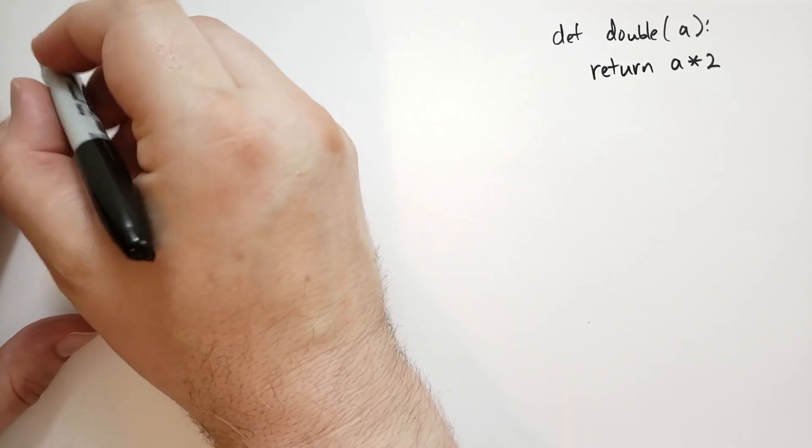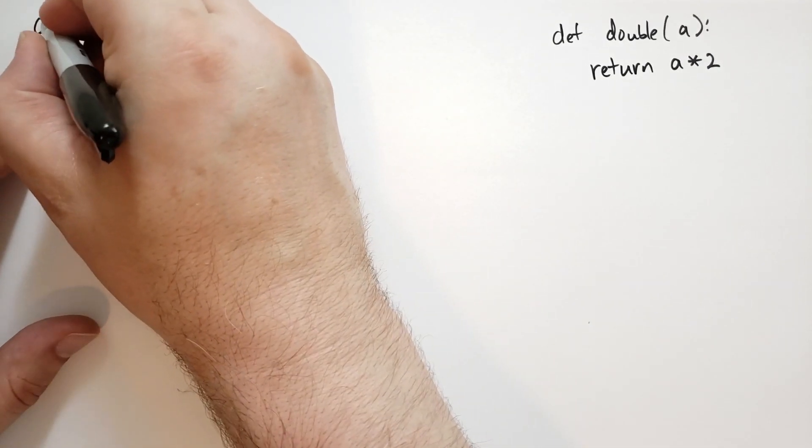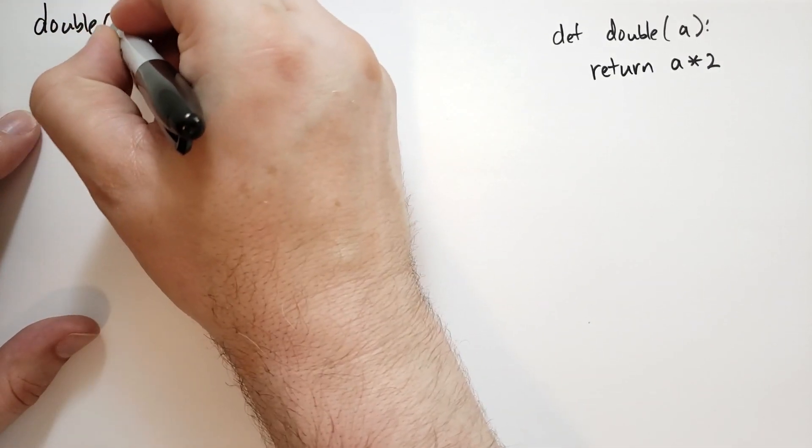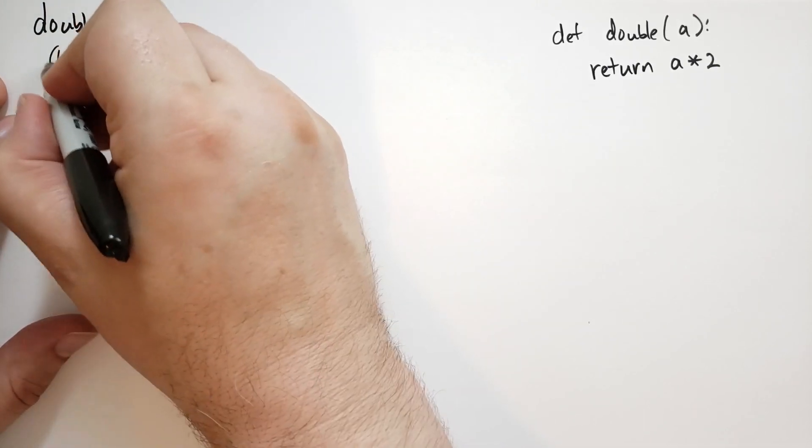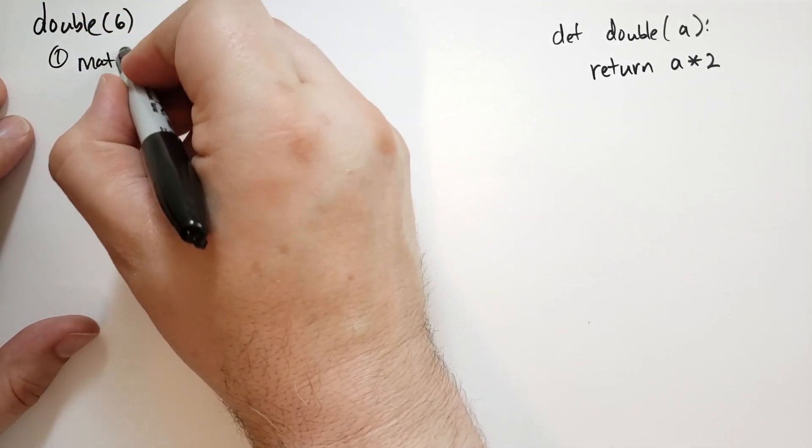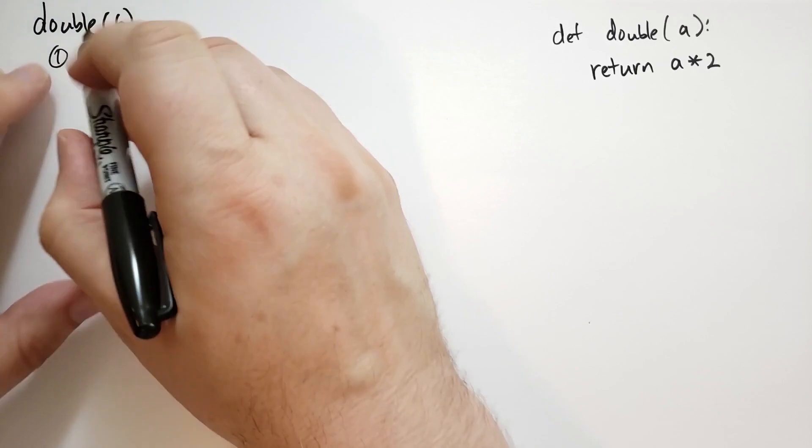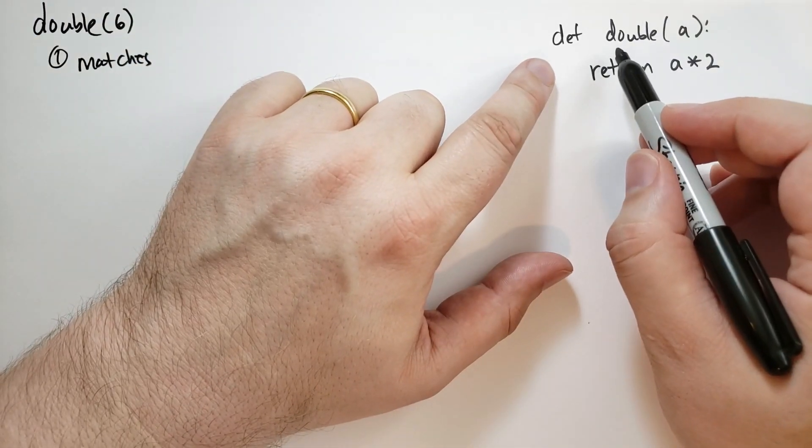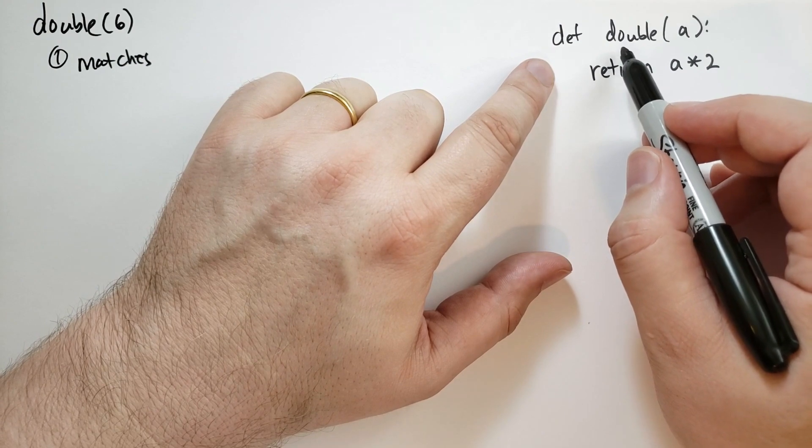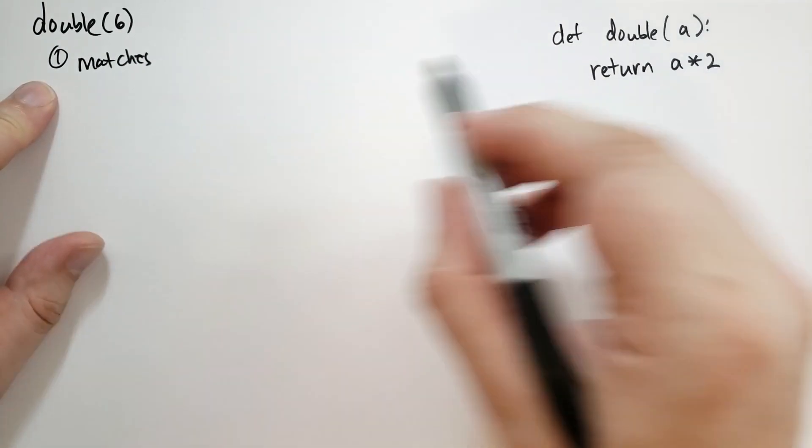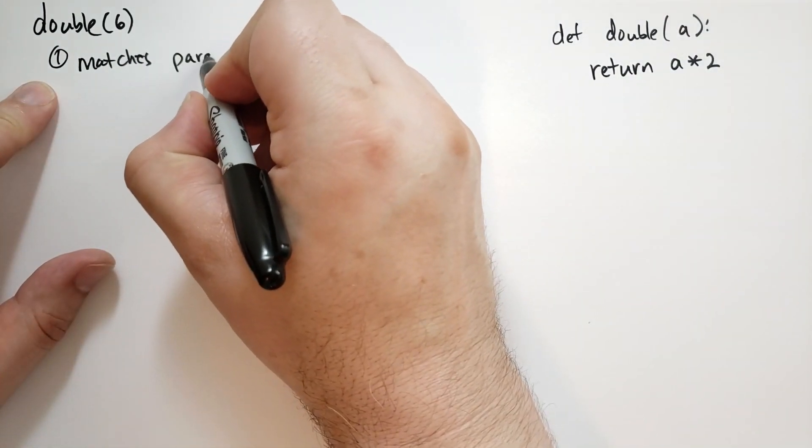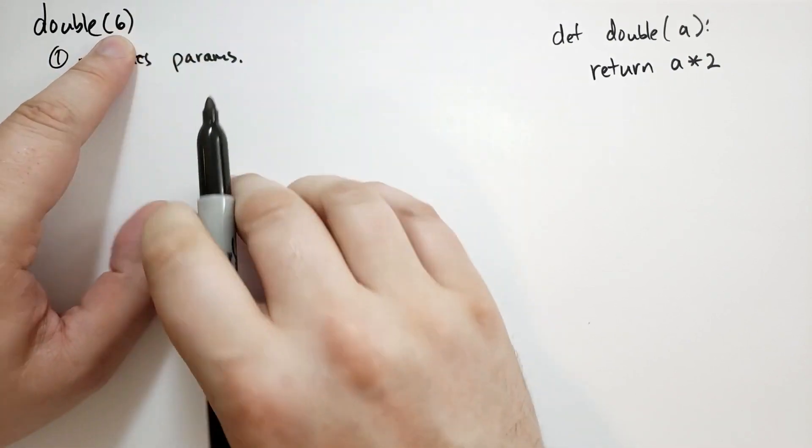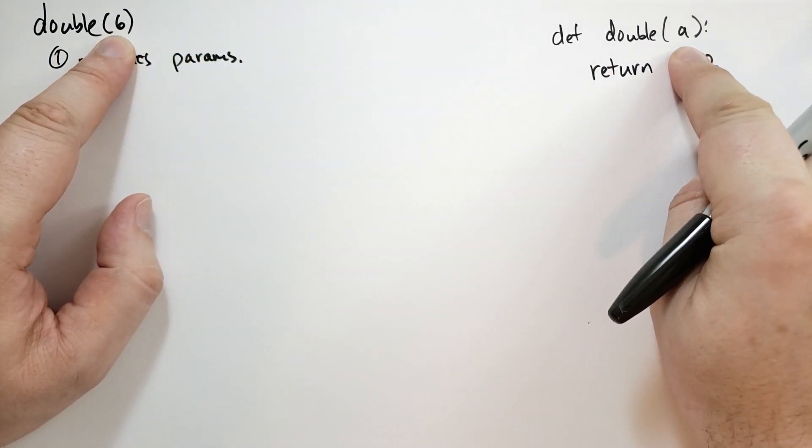Now, over here in my code, when I say double 6. Step one is it matches the parameters. Well, actually, it figured out what double was. When you define a function like this, it's assigning the function to the variable double. So double is just a variable. So first, it matches the parameters. In this case, we have one parameter, and it expects one parameter.